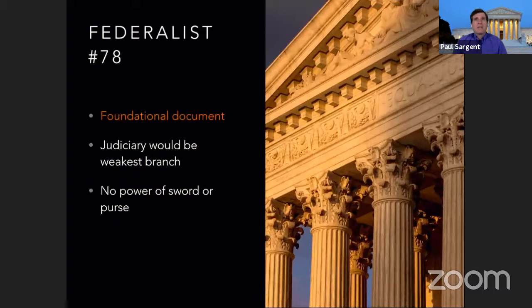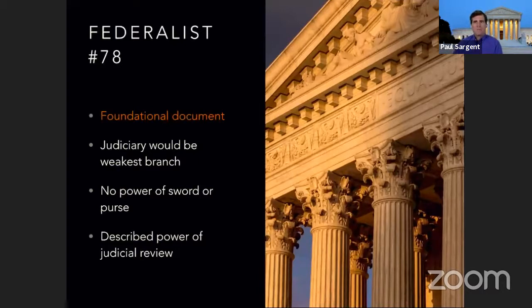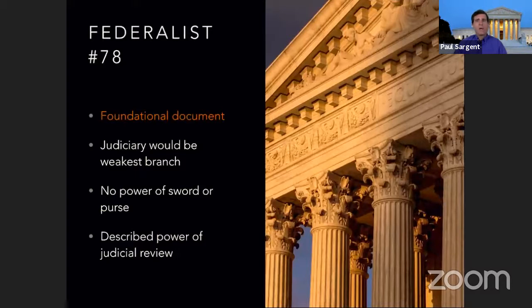Madison acknowledged the court system would have to rely on the other branches to work with its decisions. But he also laid out that the intention — even though it wasn't written into the Constitution — was for the courts to have judicial review and to determine whether laws were constitutional or not. The problem that arose: judicial review is not written into the Constitution. Madison talked about it as the intention in the Federalist Papers, but the Federalist Papers don't hold constitutional weight as actual law.